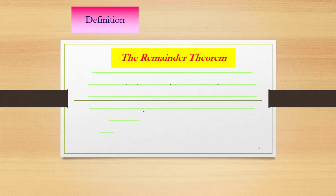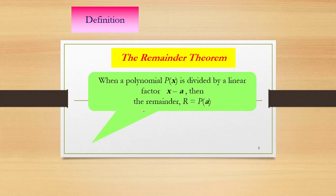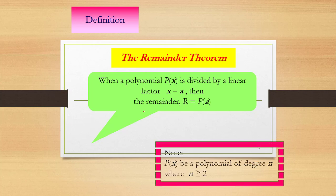The Remainder Theorem: When a polynomial P(x) is divided by a linear factor x minus a, then the remainder r should be equal to P(a).